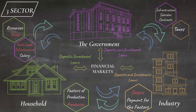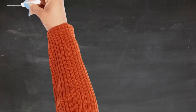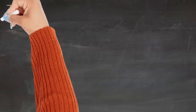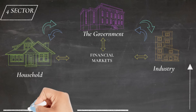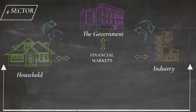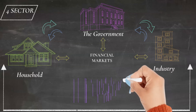This sums up the three-sector model. Now let's have a look at the four-sector model that now includes the foreign sector and its economic interactions. In the four-sector model, the interactions between the household, the government, and the industry remain as we discussed in the three-sector model, and so does the interaction between the three sectors and the financial market. The addition here is the foreign sector and its interactions with the others.